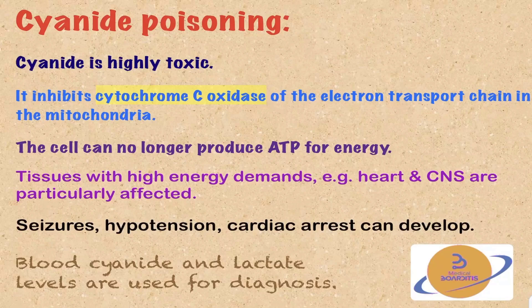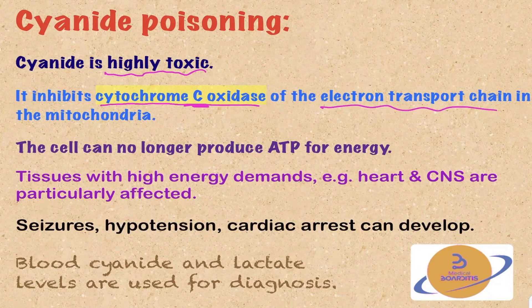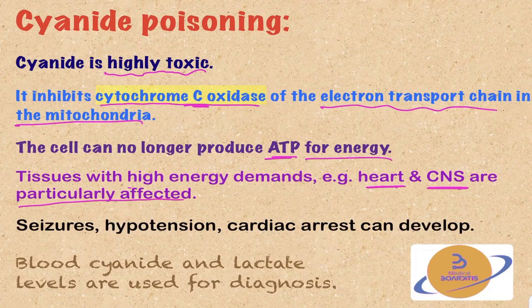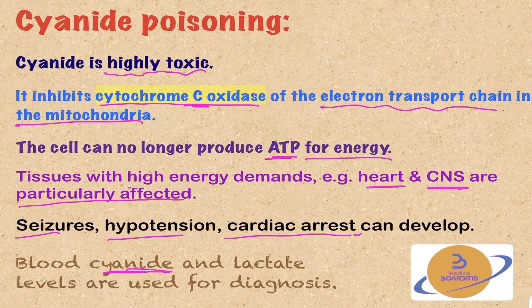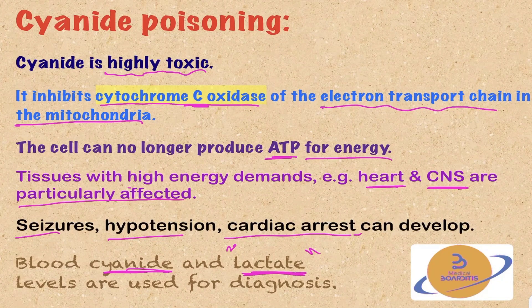Here is a quick overview about cyanide poisoning. Cyanide is a highly toxic compound because it inhibits the cytochrome C oxidase of the electron transport chain in the mitochondria, resulting in reduced production of ATP for energy. Tissues with high metabolic demands, like the heart and central nervous system, are particularly affected, leading to manifestations like seizures, hypotension, and cardiac arrest. To diagnose cyanide poisoning, we measure the blood cyanide level and the blood lactate level, because inhibiting the electron transport chain increases anaerobic glycolysis, which increases lactate production.